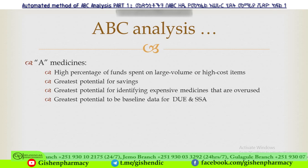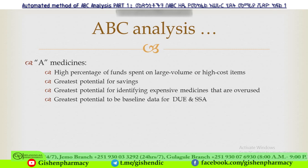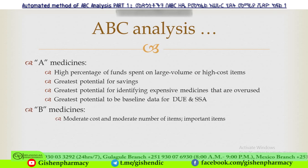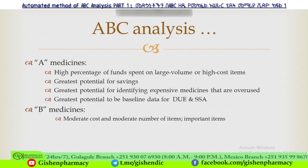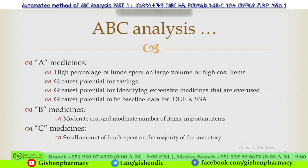Class A medicines represent a high percentage of funds spent on large volume or high cost items, with the greatest potential for saving and for identifying expensive medicines that are overused, and are the baseline for drug use evaluation. Class B medicines are moderate cost and moderate in number of items, but include some important items. Class C medicines involve a small amount of funds spent on the majority of the inventory.